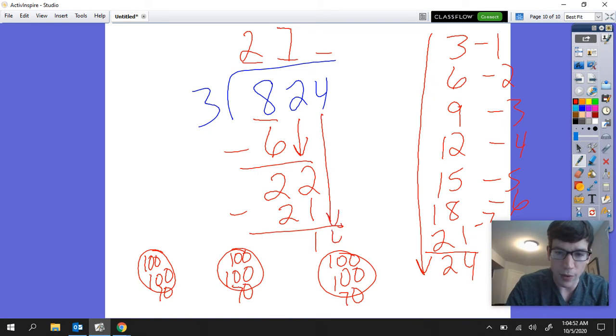And I'm going to bring down my ones place, which is a four. I have three groups and I need to split 14 up. You'll notice that 12 is the closest that we can get, which would be four ones in each group. Four times three is, let me write this over here, 12, and we're going to subtract and we'll get two.